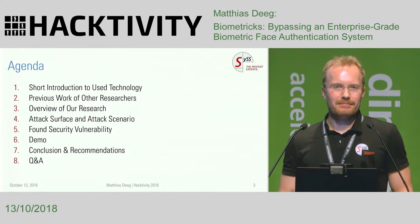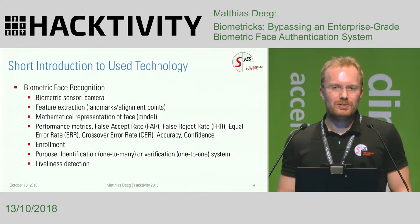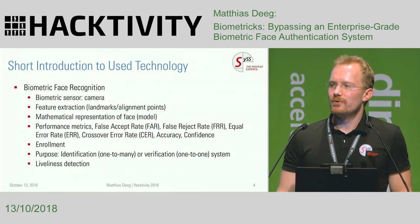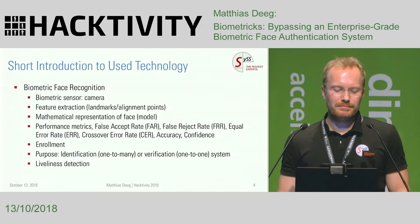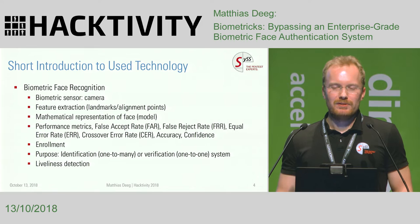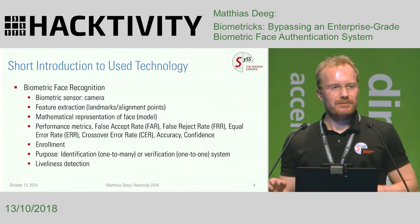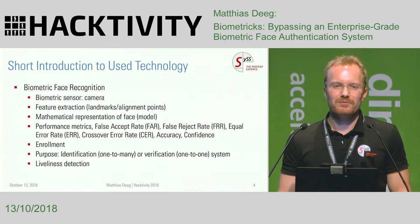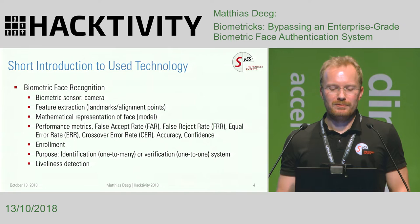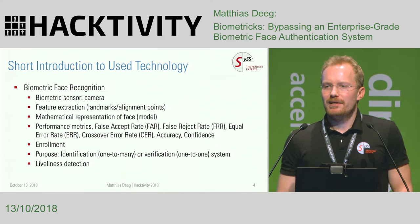When talking about biometric face authentication systems, we are also talking about face recognition technology. What you need for this is a kind of sensor — in this case a camera, the biometric sensor is a camera. This sensor acquires data which is later processed. During the processing, there is feature extraction, where you try to find specific landmarks or alignment points in an image of a face — for example, the geometry of the face between different parts, the distance between the nose and the mouth, or distance between the eyes. Then there will be a mathematical representation of your face, simply a model.